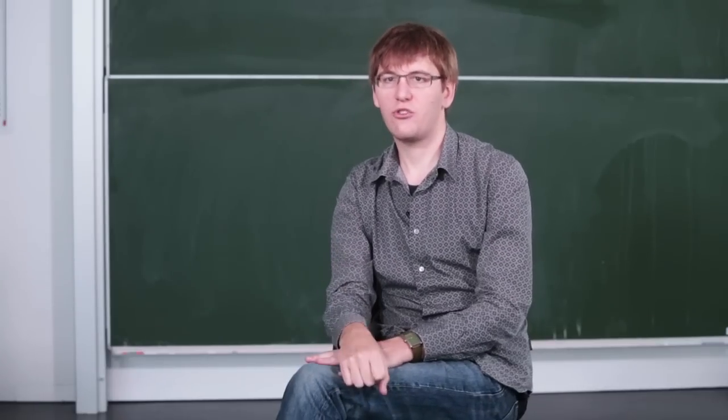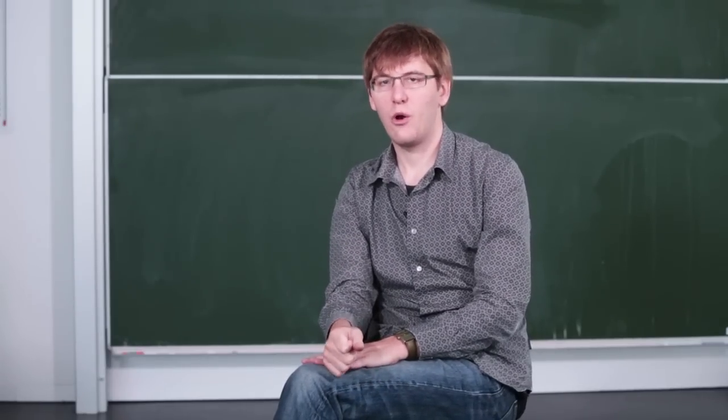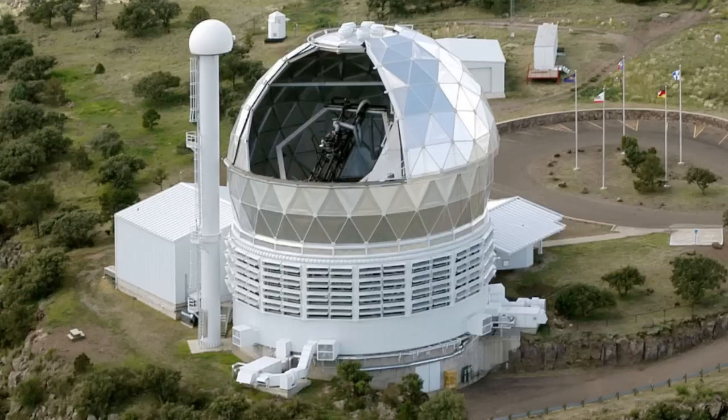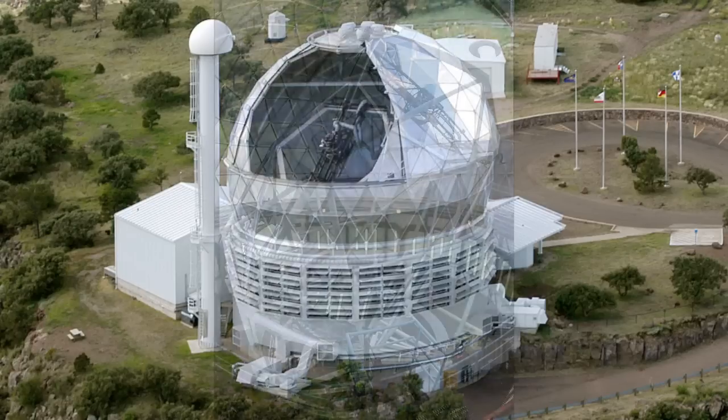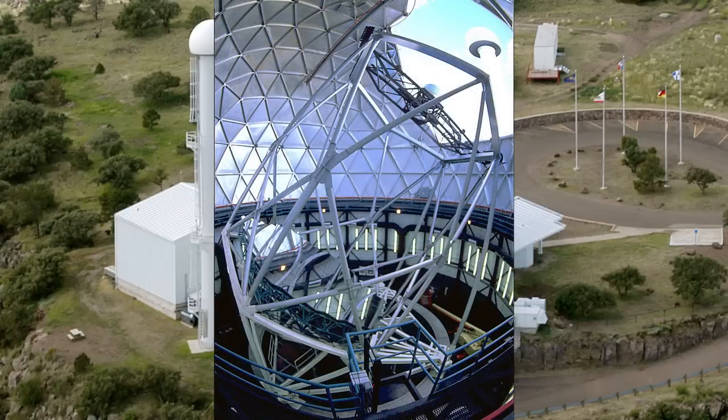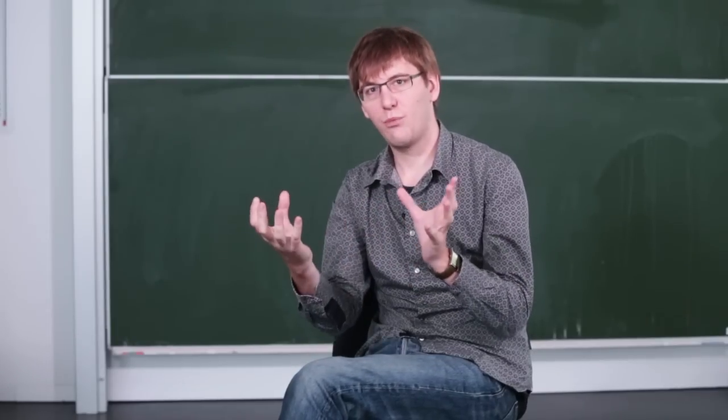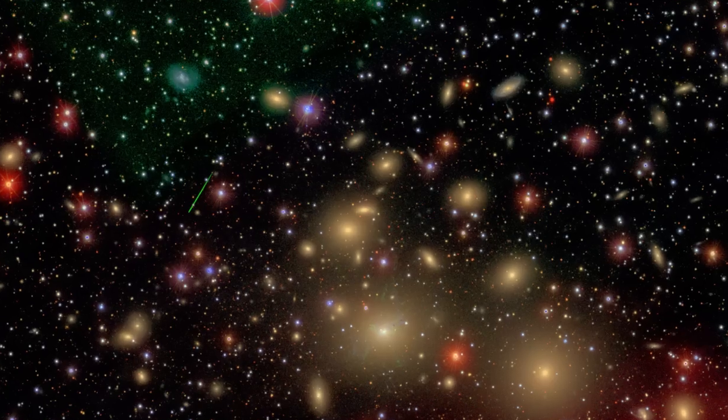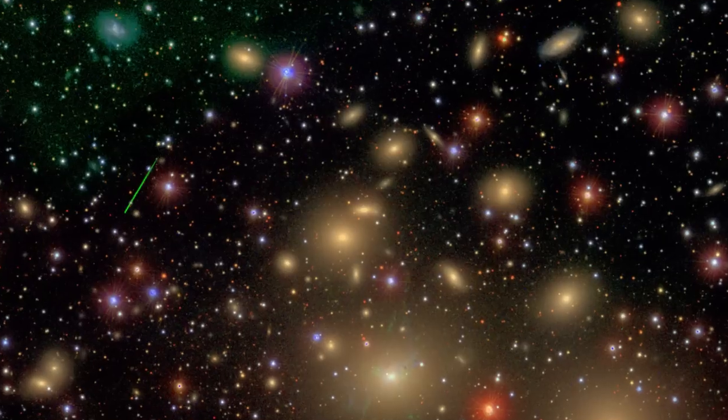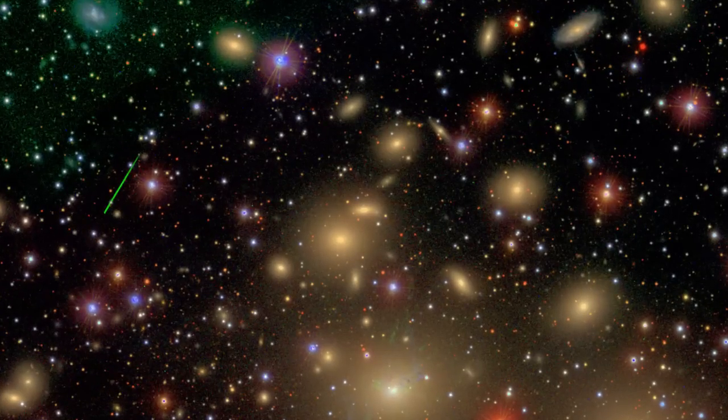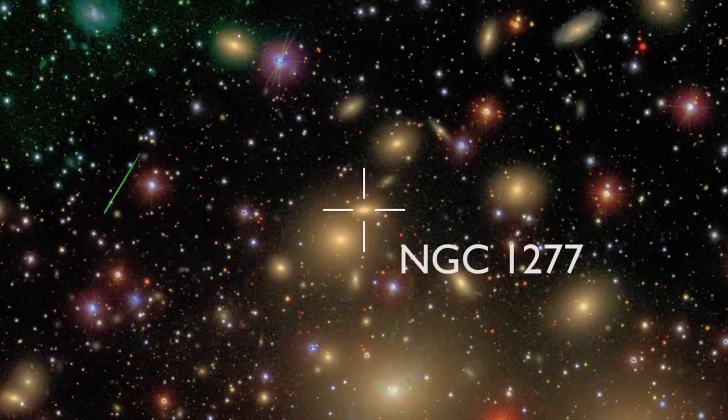And so we started a large survey on the Hobie-Ebley telescope out in West Texas to actually find the nearby galaxies for which you could do this experiment. And we observed something like 700 galaxies through this experiment to find near enough galaxies to do this. And we found a couple of very interesting galaxies that are very small but in which the stars move very, very fast. So fast that we at first didn't really believe that this was really possible. The stars move with an average speed of like 400 kilometers per second.